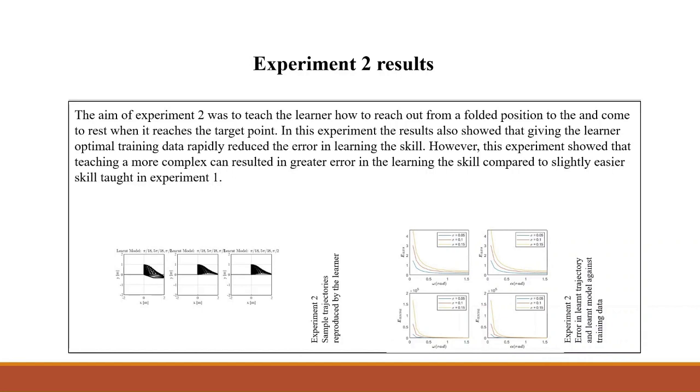The aim of experiment two was to teach the learner how to reach out from a folded position and to come to rest when it reaches the target point. In this experiment, the results also showed that giving the learner optimal training data rapidly reduced the error in learning the skill.